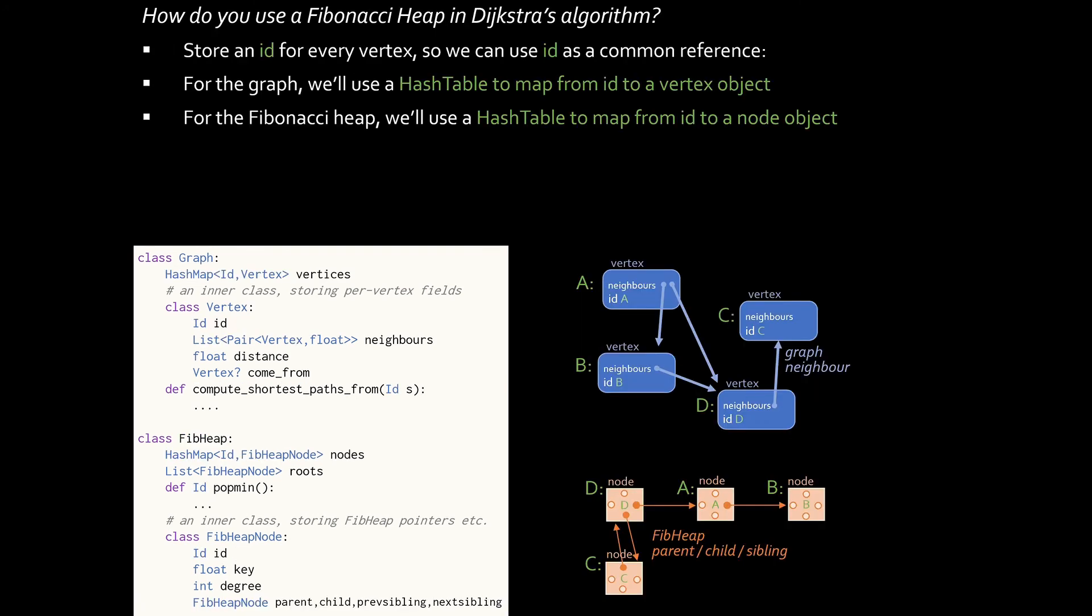Here's an entirely different software design. Let's say that we'll store an ID for each vertex, and we'll use ID as a common reference. IDs might be integers or strings or whatever key you want. For the graph, I'd store a collection of vertices and neighbors, and additionally, I'll give each vertex an ID field. And additionally, I'll store a hash map which says, given an ID, how do I retrieve the vertex object for that ID?